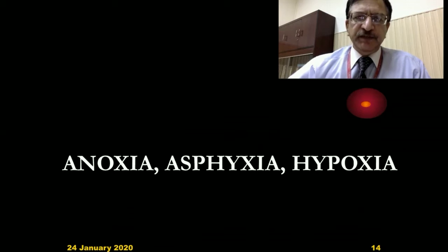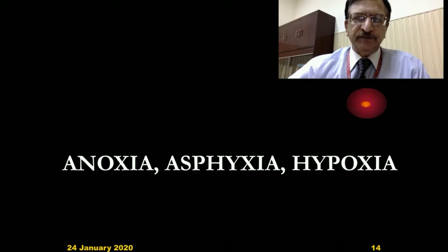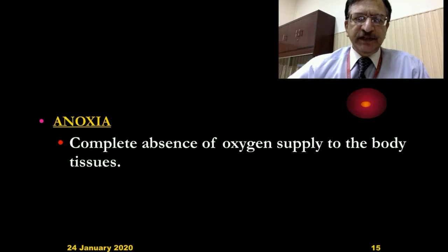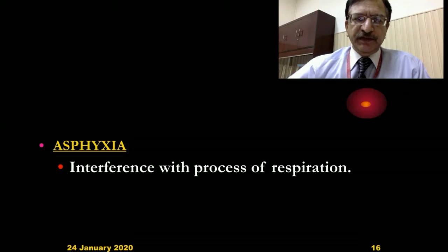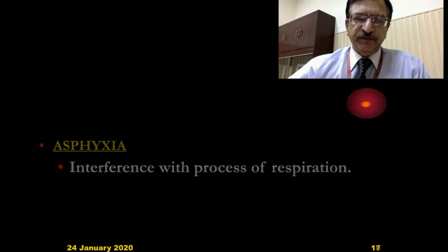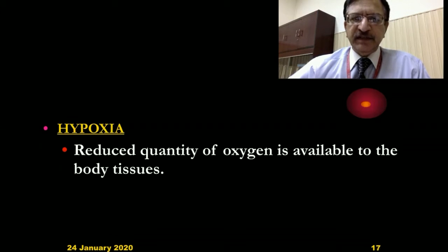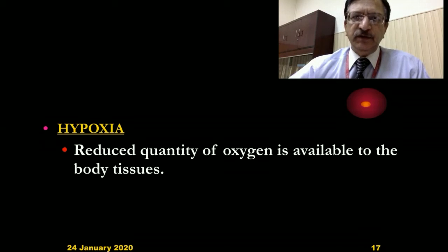Three terms are commonly used and we should understand them: anoxia, asphyxia, and hypoxia. Anoxia is the complete absence of oxygen supply to the body tissues. Asphyxia is interference with the process of respiration. Hypoxia means a reduced quantity of oxygen which is available to the body tissues.